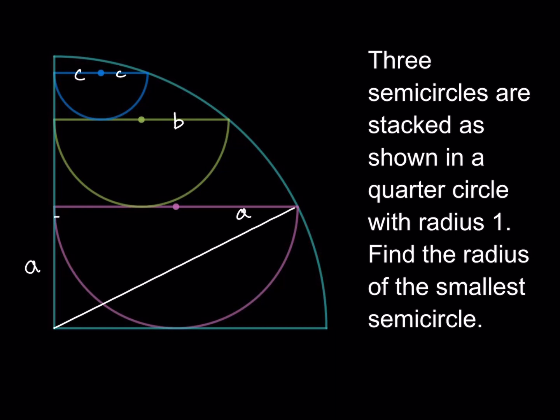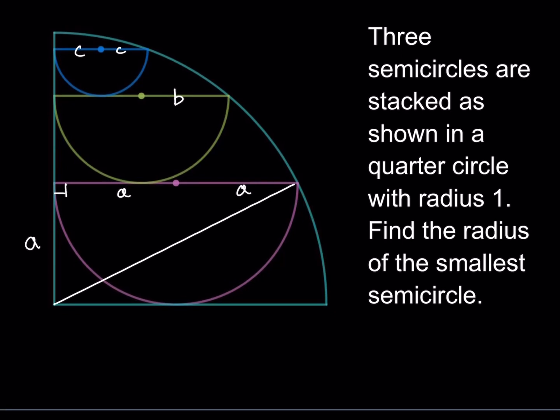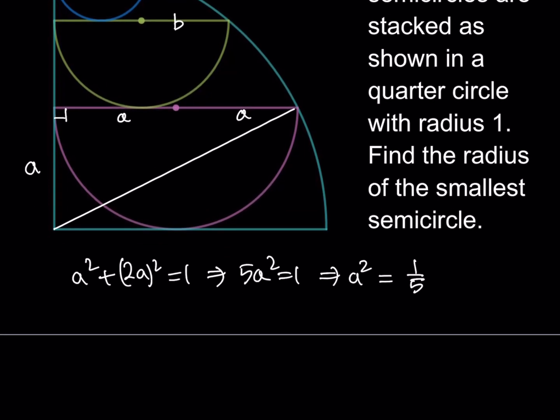To keep a long story short, this is going to be A as well, and what we have is A squared plus 2A quantity squared is equal to 1, which means 5A squared is equal to 1. From here we get A squared is equal to 1 fifth, and A is equal to 1 over root 5, which can be written as square root of 5 over 5. That's the radius of the largest semicircle basically here. And how do I know that this is equal to 1? Because we have a quarter circle with radius 1.